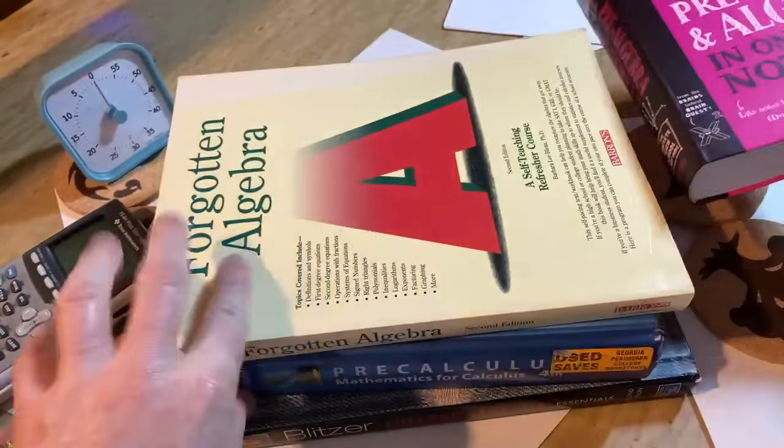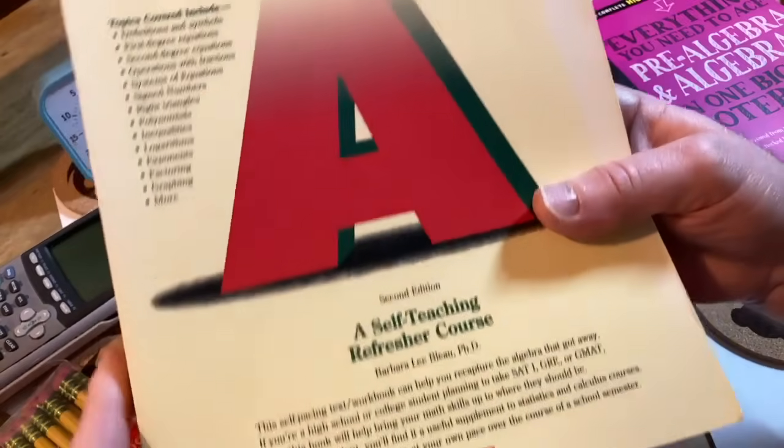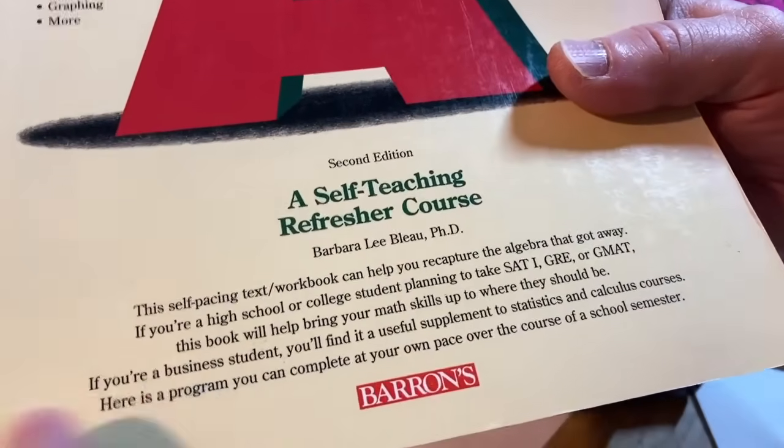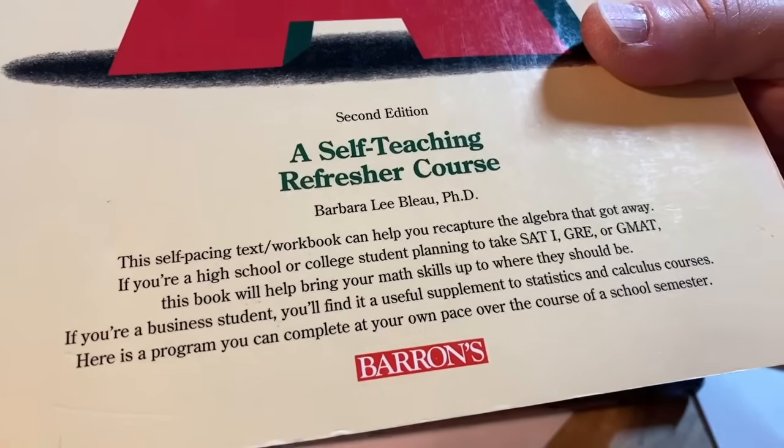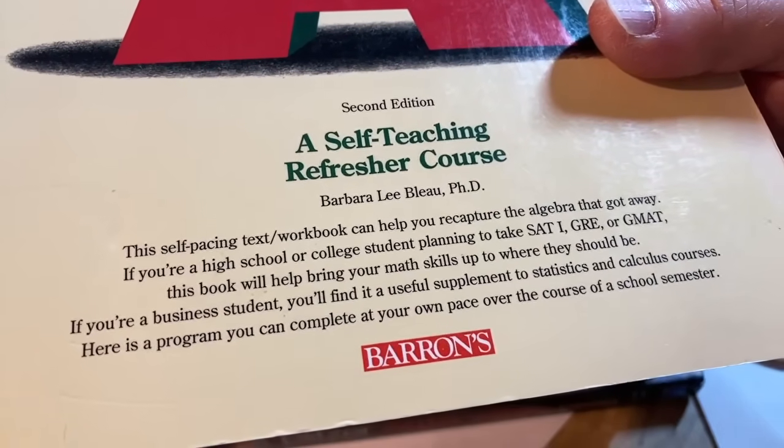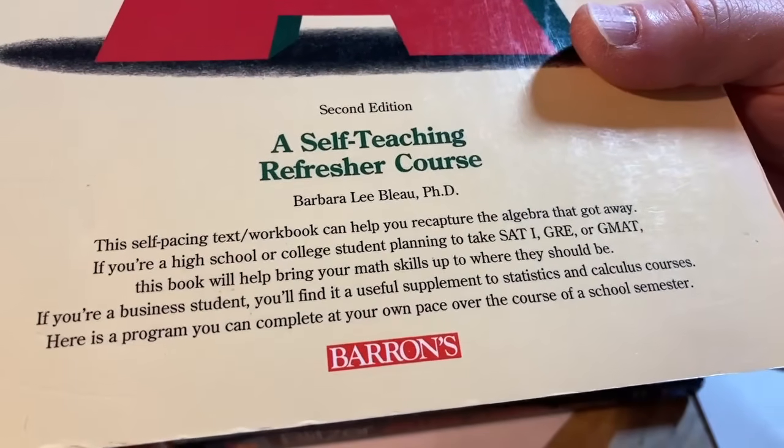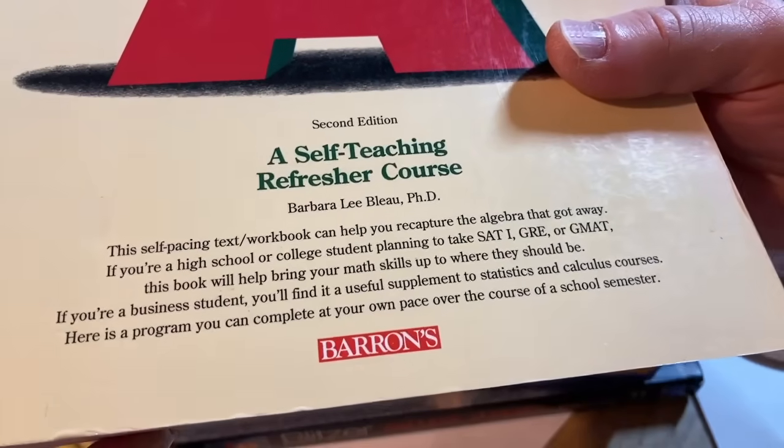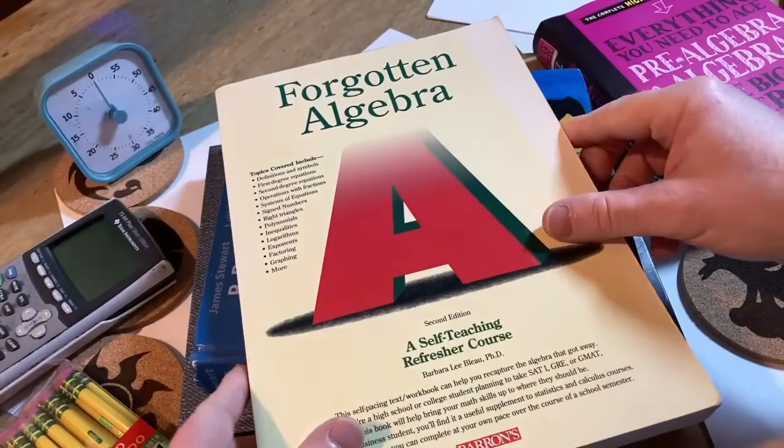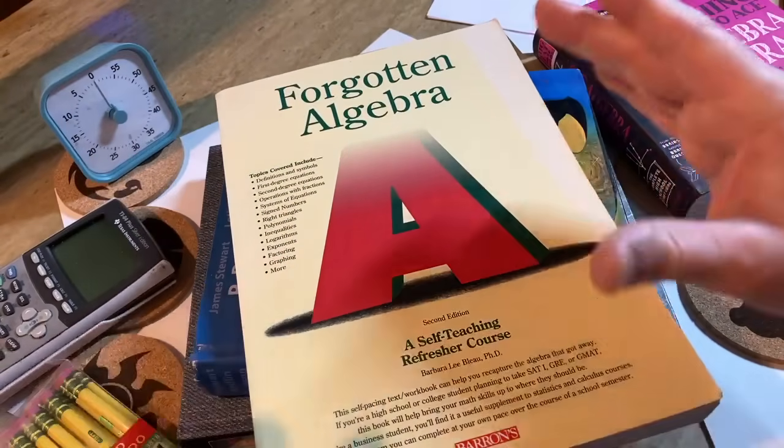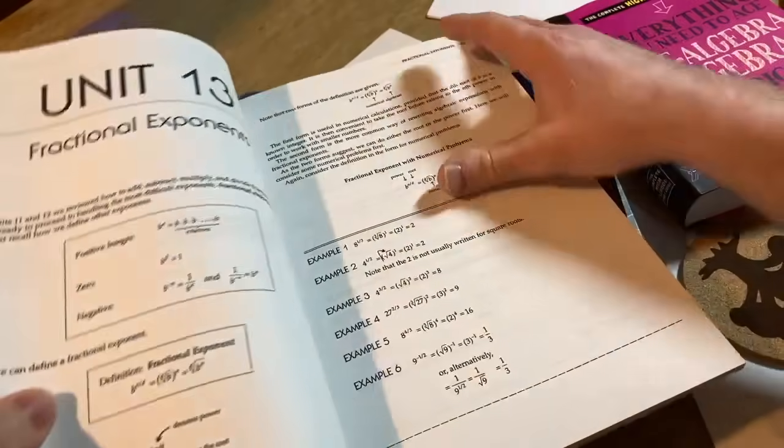Another really good choice, which I believe is still widely available, this is Forgotten Algebra. It's got a really cool name. A self-teaching refresher course. Here it says, this is a self-pacing text workbook that can help you recapture the algebra that got away. If you're a high school or college student planning to take SAT1, GRE, or GMAT, this book will help you bring your math skills up to where they should be. If you're a business student, you'll find it a useful supplement to statistics and calculus courses. Here's a program you can complete at your own pace over the course of a school semester. I like that they're being realistic. You're not going to be able to sit down in one night and work through this.